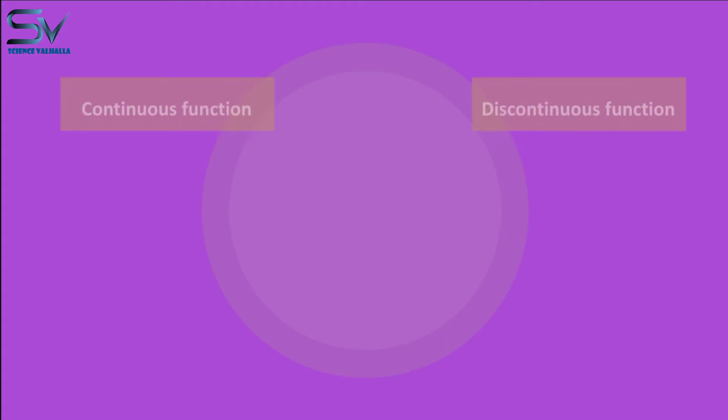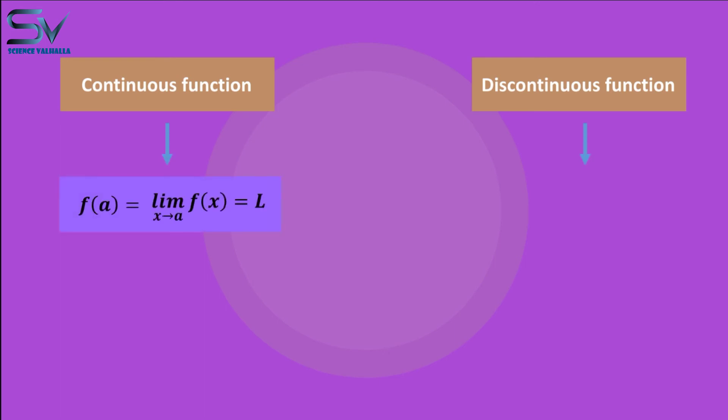So, these are the conditions for continuity and discontinuity at a point. Other conditions for discontinuity at a point exist as well. Let's take a look at them as well.